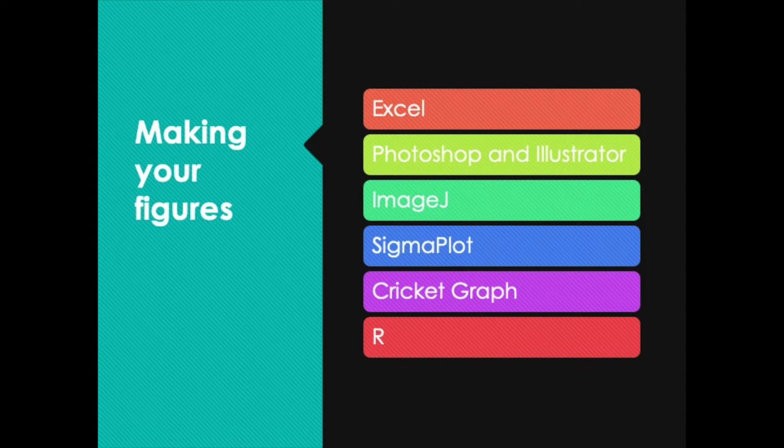ImageJ is a software that's similar to Photoshop, but it's a free version provided by the NIH. Sigmaplot is commonly used, as is Cricut Graph. A lot of people are using R these days to make figures, and R is a pretty powerful program that makes really nice-looking visuals. And there are probably other ways to do it that I haven't mentioned here.